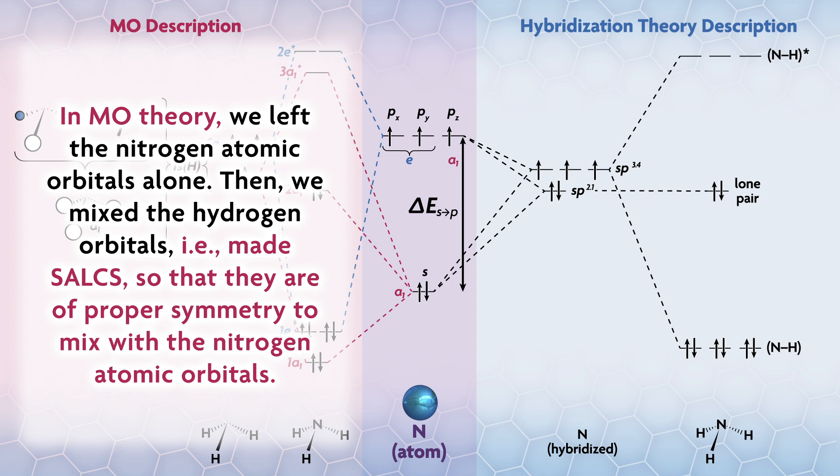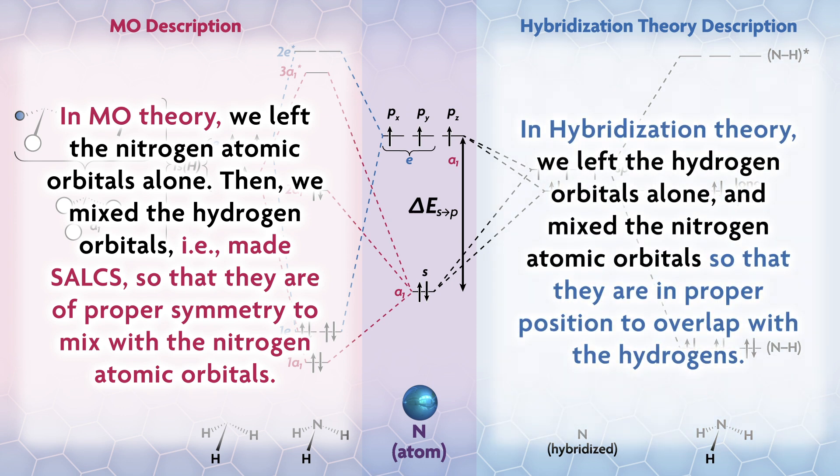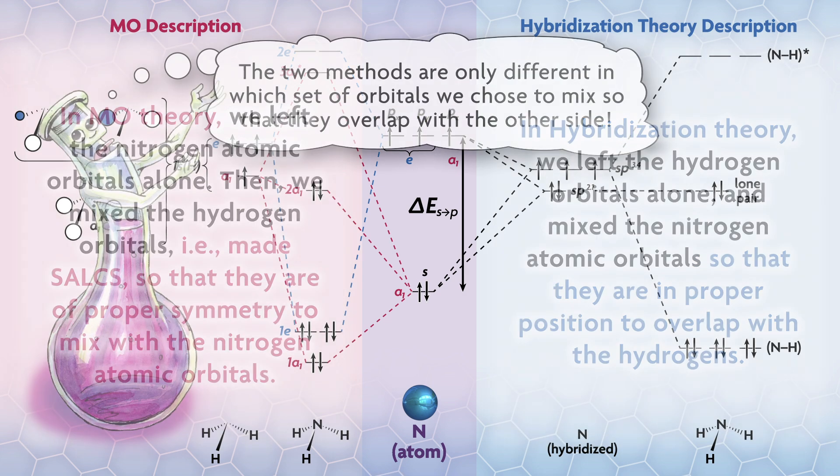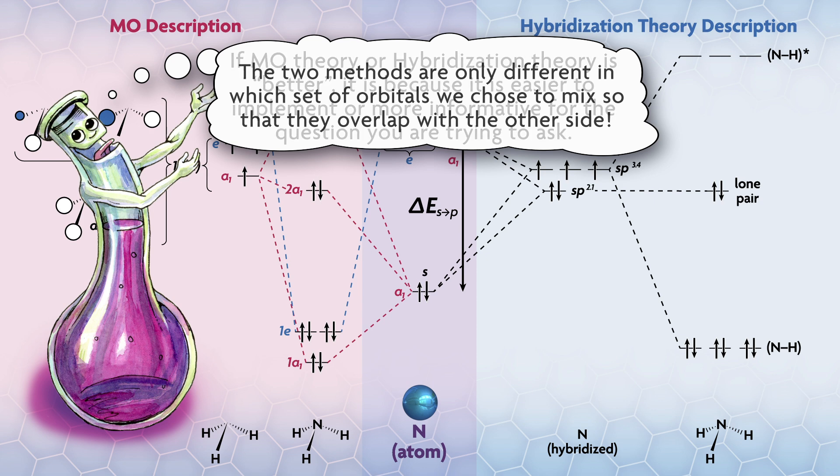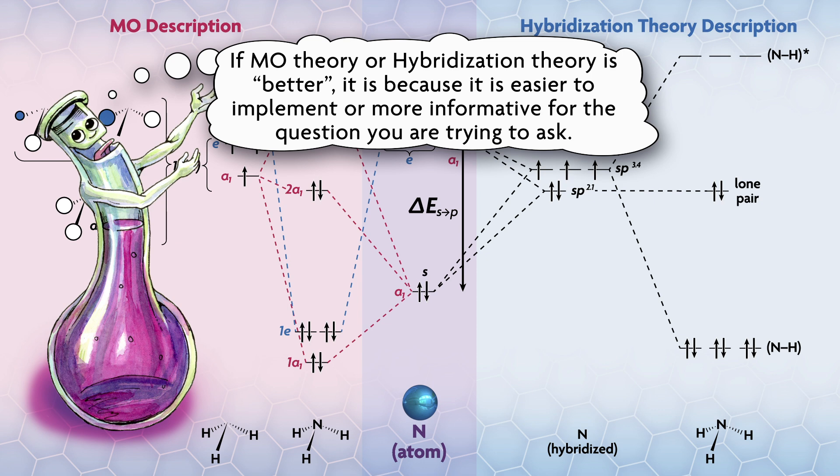So which picture for ammonia is better? In reality, how could one be better? In MO theory, we left the nitrogen atomic orbitals alone, then we mixed the hydrogen orbitals, i.e., made SALCs, so that they are proper symmetry to mix with the nitrogen atomic orbitals. In hybridization theory, we left the hydrogen orbitals alone and mixed the nitrogen atomic orbitals so that they are proper position to overlap with hydrogens. The two methods are only different in which side of the orbitals that we chose to mix so that they overlap with the other side.